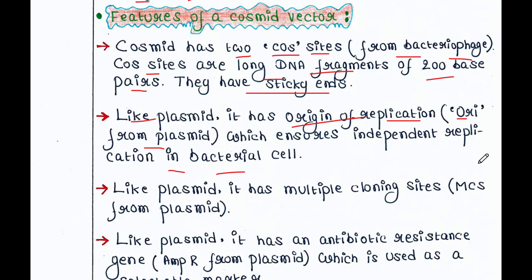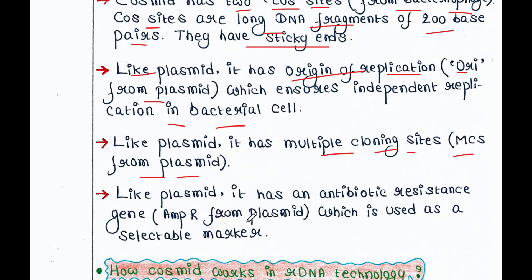Just like Plasmid, this Cosmid can also replicate in the bacterial cell. Like Plasmid, it has MCS — that is multiple cloning sites. MCS is also taken from Plasmid. If we want to insert a foreign gene into a vector, we need MCS, because we can cut it using restriction enzyme and insert our gene of interest. Like Plasmid, it has an antibiotic resistance gene — specifically ampicillin resistance gene — which is used as a selectable marker to determine whether a bacterial cell received the vector or not.